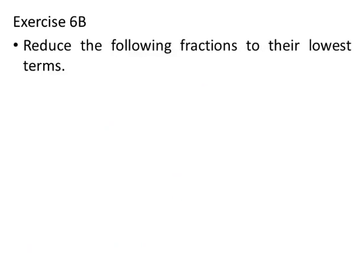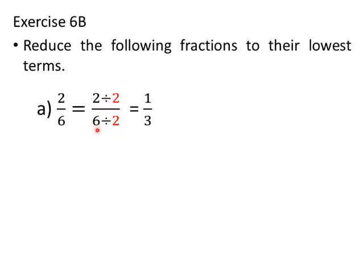Let's do Exercise B: Reduce the following fractions to their lowest terms. First question: Reduce 2 by 6 to its lowest term. The HCF of 2 and 6 is 2. So we divide both the numerator and the denominator by 2. Thus, 2 divided by 2 upon 6 divided by 2 equals 1 upon 3. The lowest term of 2 by 6 is 1 by 3.